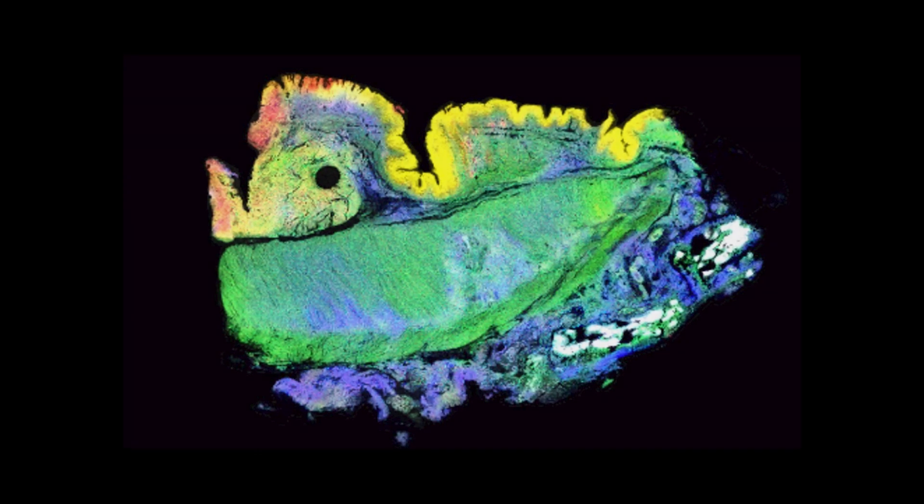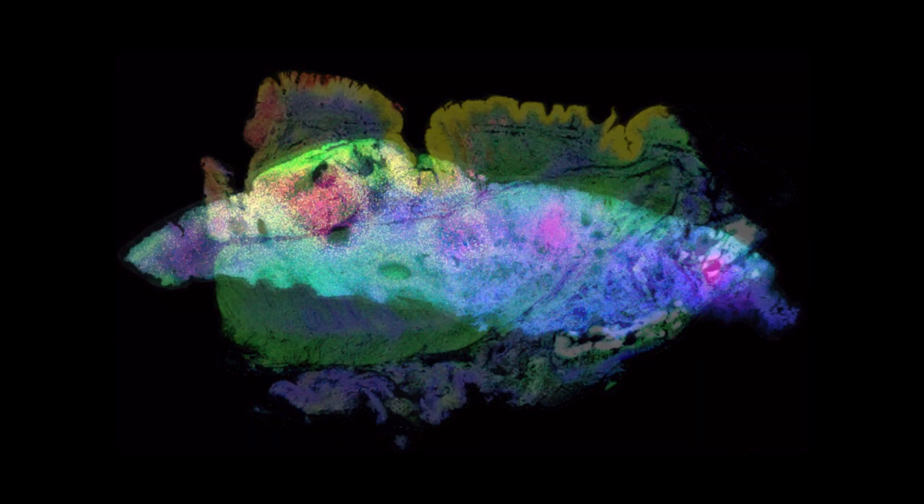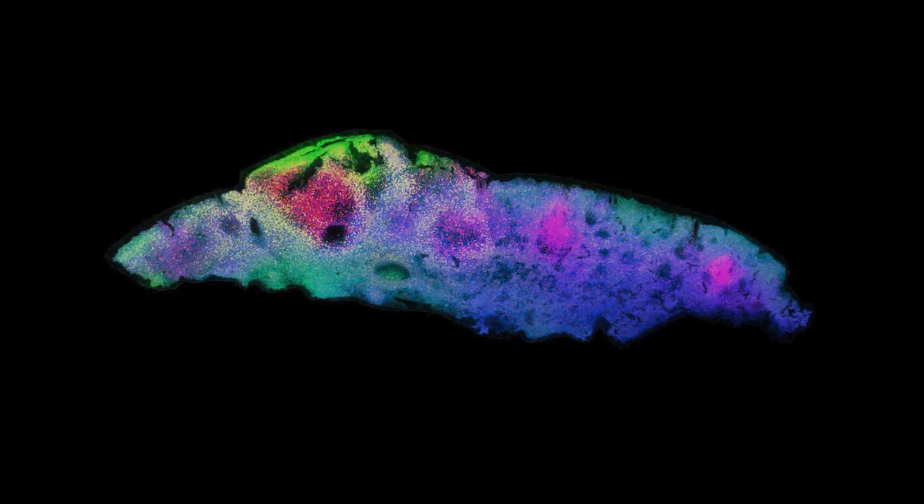We've also seen that in particular tumor subtypes, like if it's a mucinous tumor or a neuroendocrine tumor, there are very specific classes of glycan structures that are detected in these types of tumors.